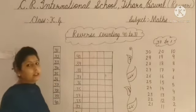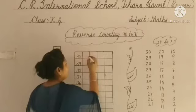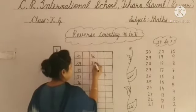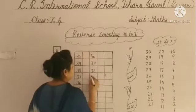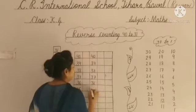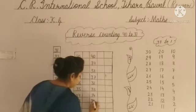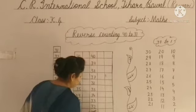आपको ऐसे ही करना है, ठीक है? अब हम बिना देखे बोल-बोल के करेंगे. 40, 39, 38, 37, 36, 35, 34, 33, 32, 31.